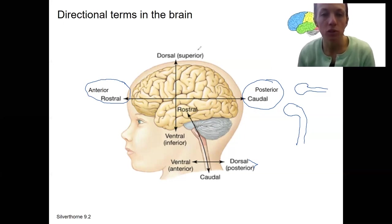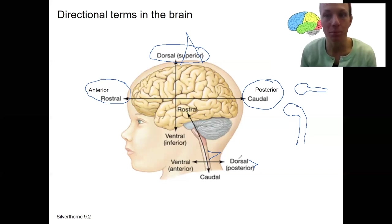In the brain, dorsal is superior because that's the backside. If you were to put a fin on the brain, like a dorsal fin of a shark, it would be up here. If you were to put a fin on your spinal cord, it would be back here. So the dorsal fin is on the backside. That's a different meaning, though, in the spinal cord in terms of posterior versus superior.